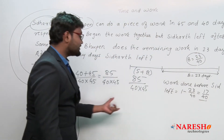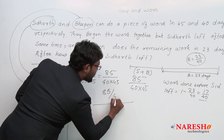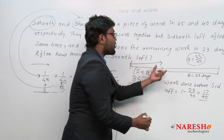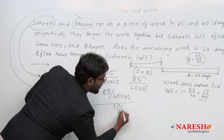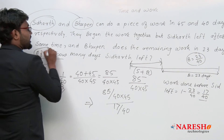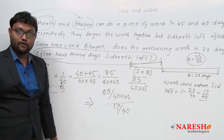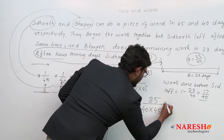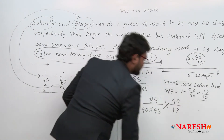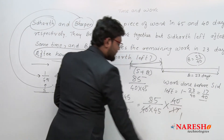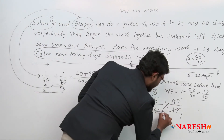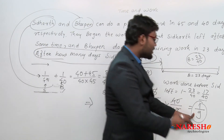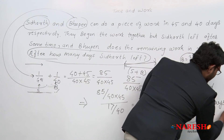So we calculate: 17/40 ÷ 85/(40 × 45) = (17/40) × (40 × 45)/85. The 40s cancel, and 17 × 5 = 85, so 85/85 = 1, giving us 1/9 work per... wait — reciprocating: we get 45/5 = 9 days. So after how many days did Siddhartha leave? After 9 days, Siddhartha left.